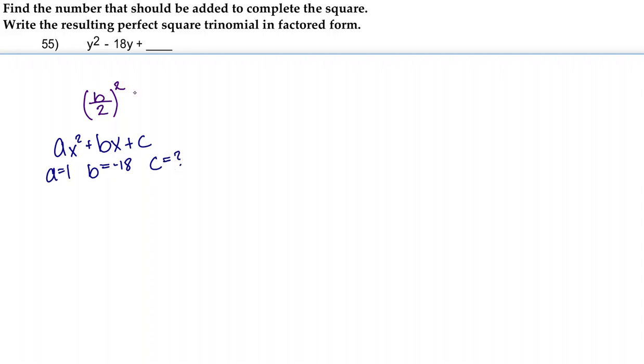Let's go ahead and plug in b into this formula. That's going to give us negative 18 over 2 squared. Negative 18 divided by 2 is negative 9. Negative 9 squared is 81. So 81 is what we're going to plug in for c to make this expression a perfect square trinomial.